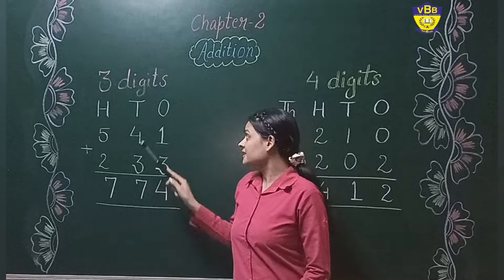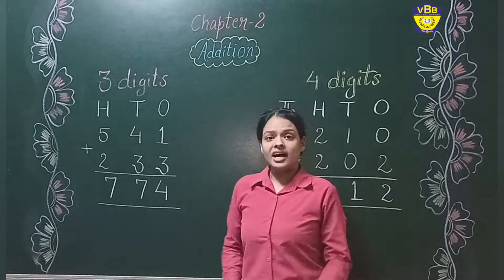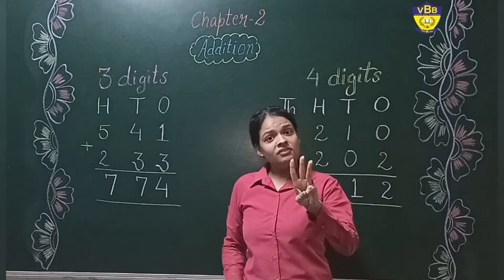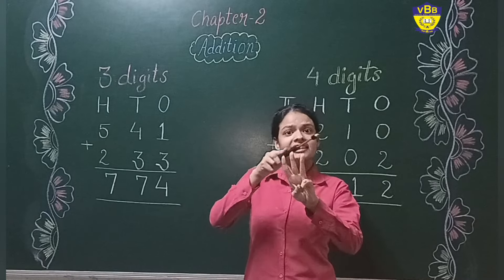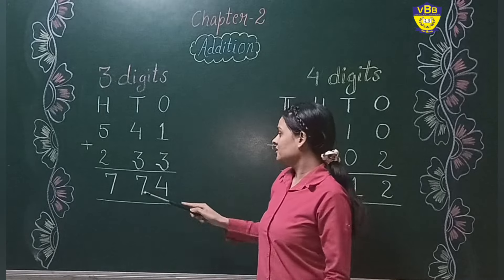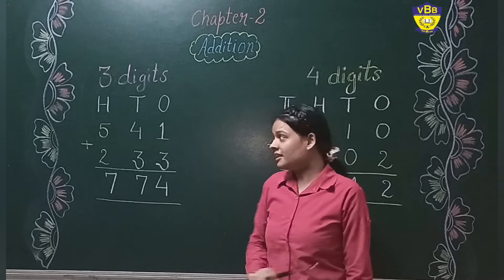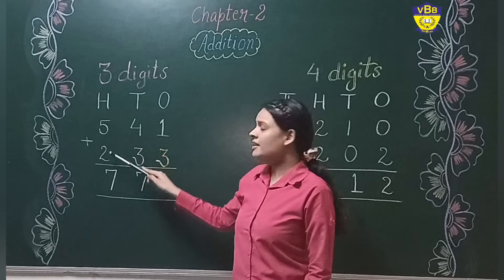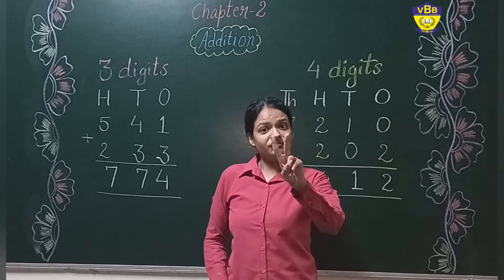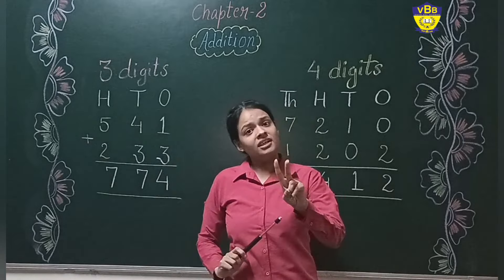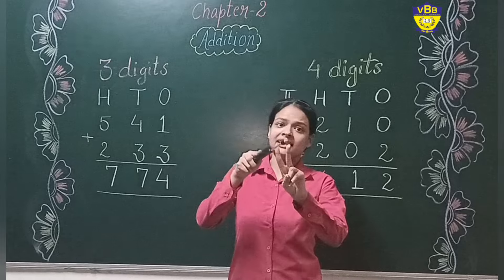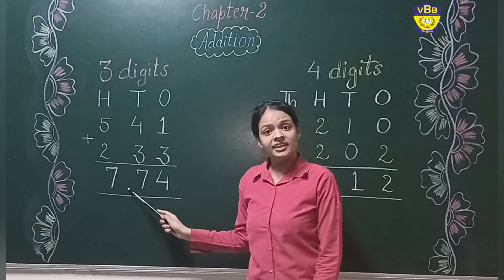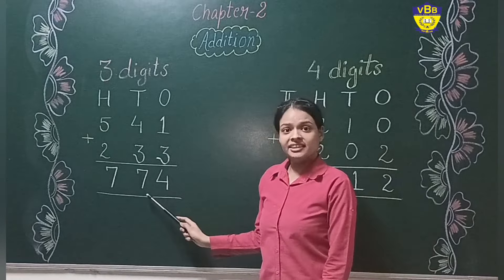On the tens place, there are four and three. So I will open three fingers and count after four — five, six, and seven. So I have written seven here. Same with the hundreds place: five and two. So I will open two and count after five — six and seven. So as you see, the number is seven hundred seventy-four.